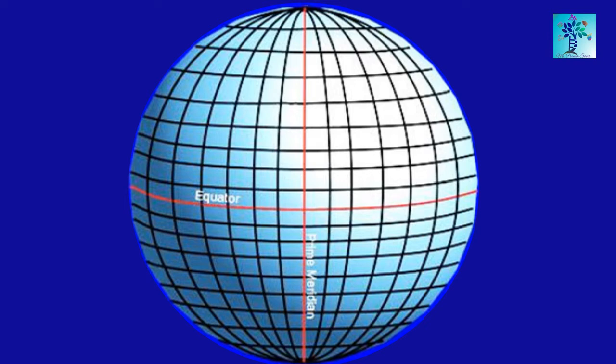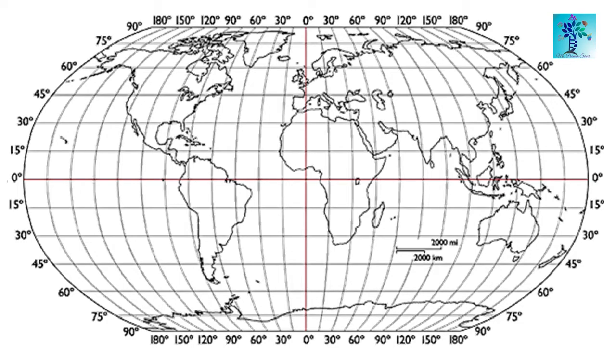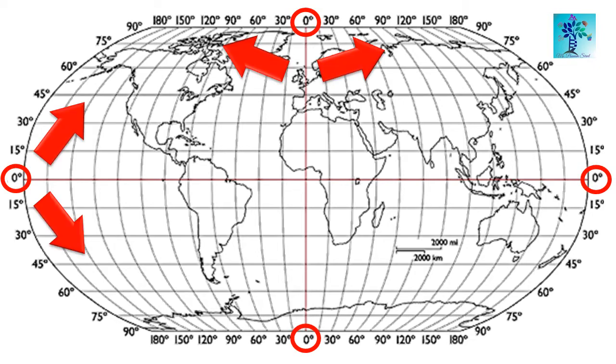These lines will not be able to help us to locate a place on the Earth. So, to make it more precise and accurate, geographers have numbered each line. The lines like equator and prime meridian are numbered as 0 degree. And as we move away from these lines, the numbers go on increasing.